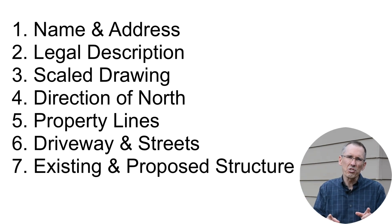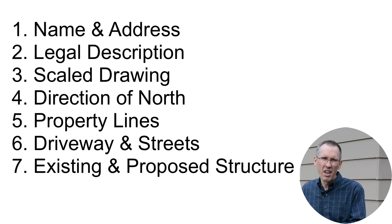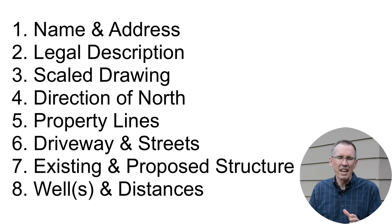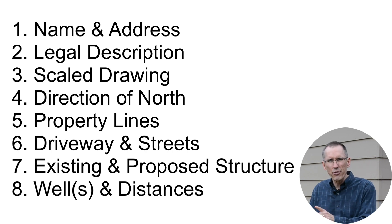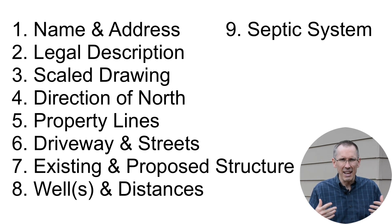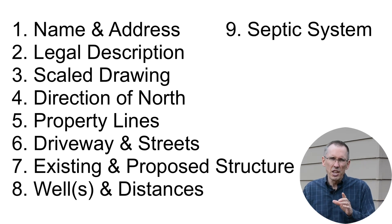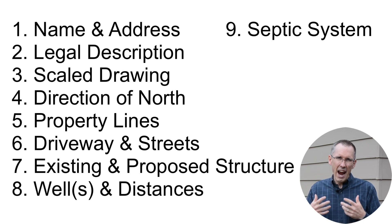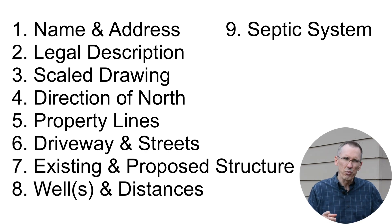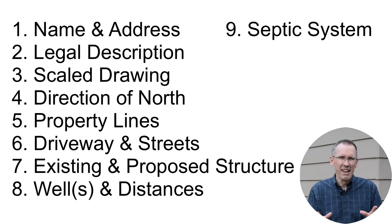Number seven, your existing structures and your proposed structures. Number eight, if you have a well or even your neighbor has a well, the location of those wells and the distance from your proposed structures must be shown on the site plan. Number nine, if you have a septic tank like I do and a drain field, you need to show their location. In our county, we also have to show the location of a drain field replacement area just in case ours ever fails.